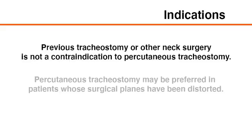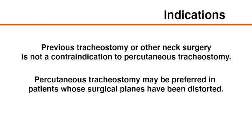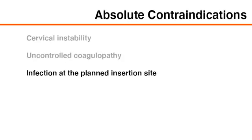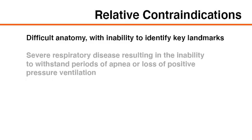In fact, percutaneous tracheostomy may be preferred in patients whose surgical planes have been distorted. Absolute contraindications to percutaneous tracheostomy include cervical instability, uncontrolled coagulopathy, and infection at the planned insertion site. Relative contraindications include difficult anatomy with inability to identify key landmarks,